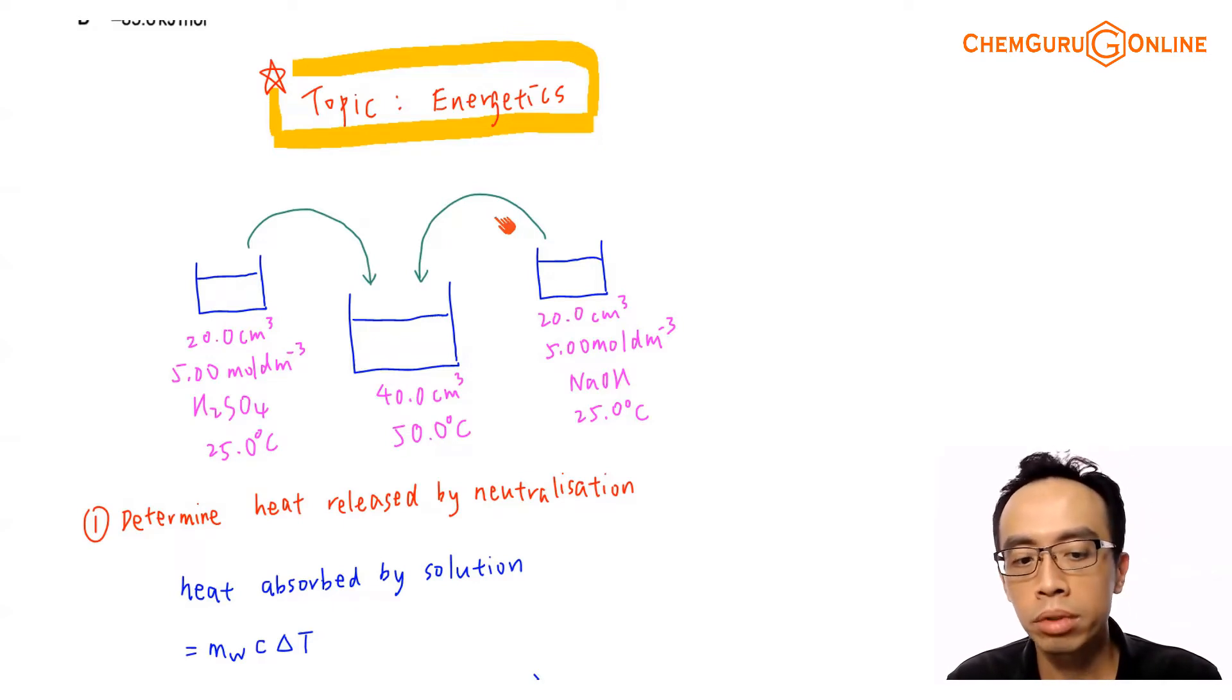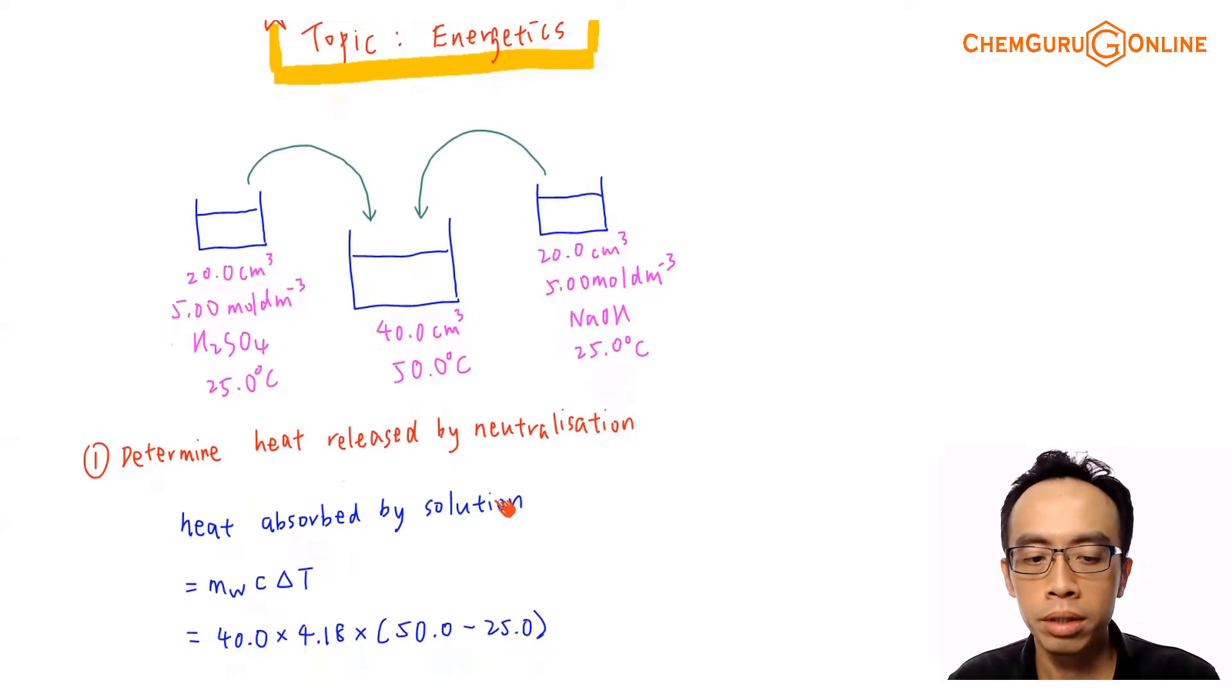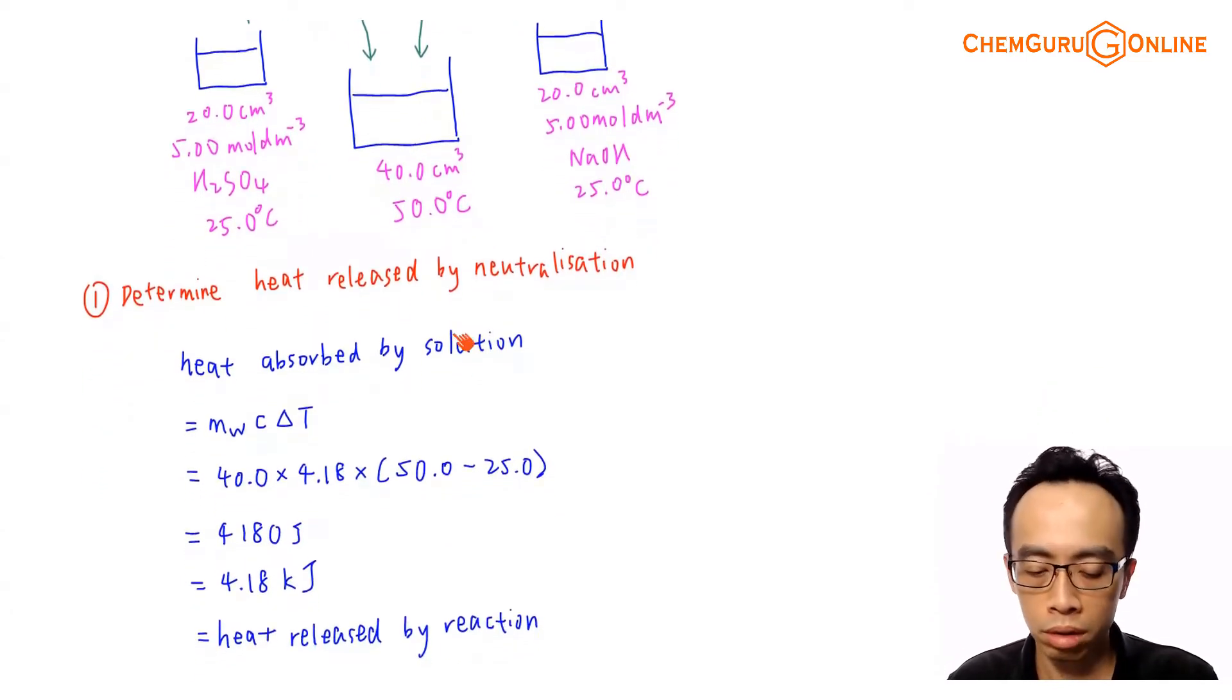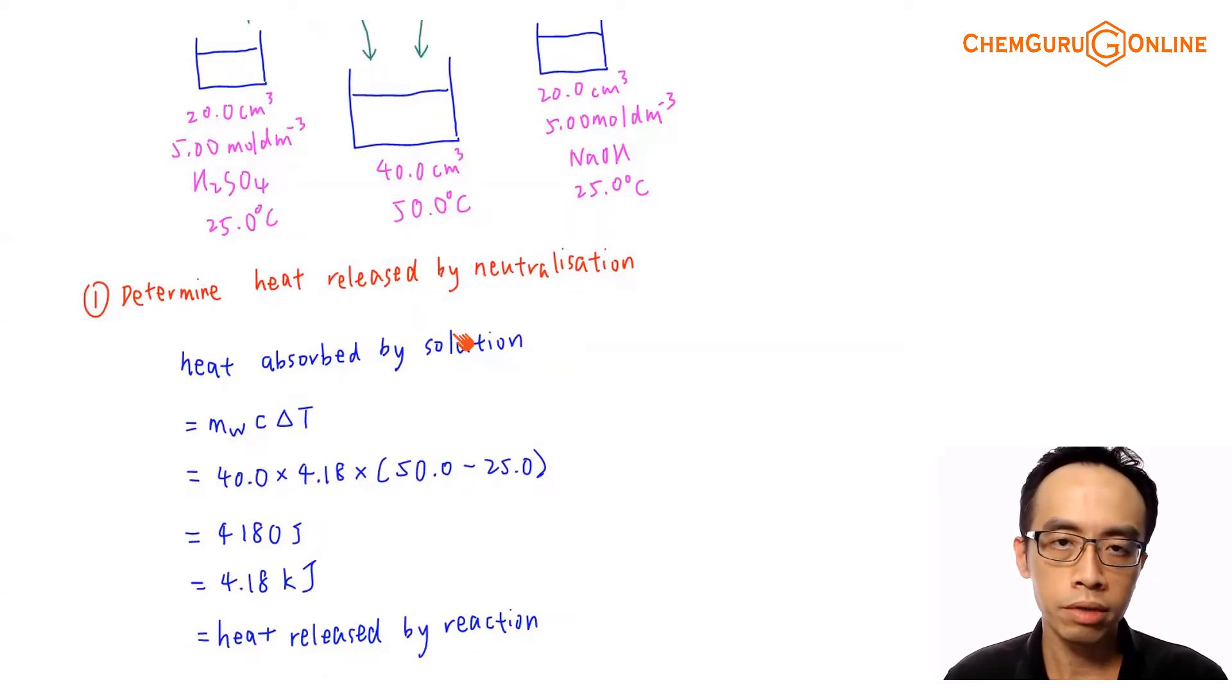So the reaction should give off heat and the water or the solution absorbs this heat and the temperature for water increases. So there are a few steps that we need to take to calculate enthalpy change of neutralization. First thing is I want to determine the heat released by neutralization.